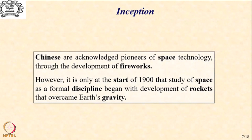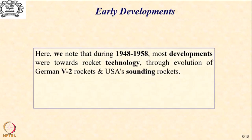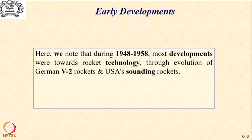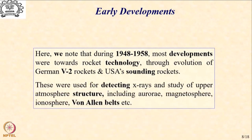The main objective was: can you overcome the earth's gravity? These things continued in experimental form until we reached the decade 1948 to 1958, where the evolution was a lot more focused, particularly with German V2 rockets and USA's founding rockets which came into being and became quite popular and visible. These rockets were primarily used for detecting X-rays and study of upper atmosphere structure including aurorae.